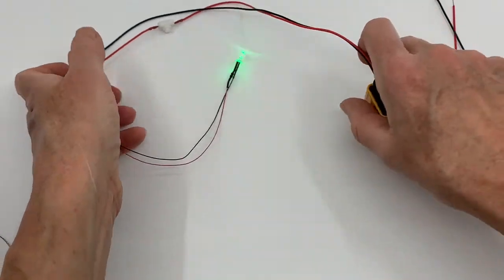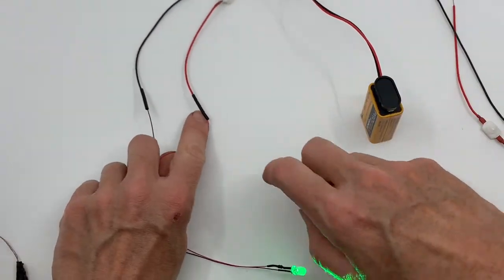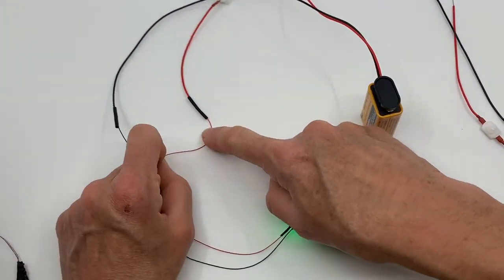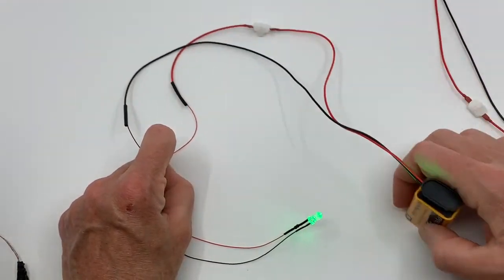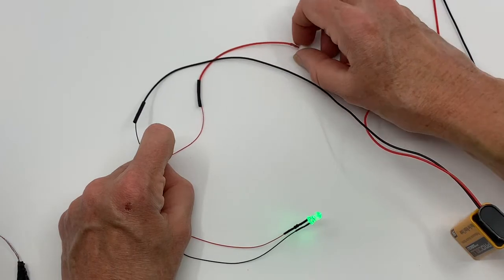When you go to connect the lights to the battery snap, you're going to want to connect red wire from the lights to red wire on the battery snap and black wire on the lights to black wire on the battery snap. Then you can easily turn your lights on and off.